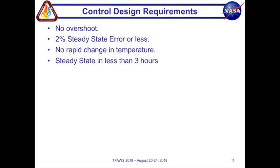And so going on for our control design something that we need: we need to have zero overshoot, we need to have 2% or less steady state error, no rapid change in temperatures. We don't want a step function or massive hike and we want to have steady state in less than 3 hours.